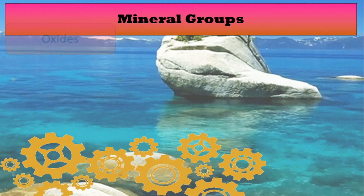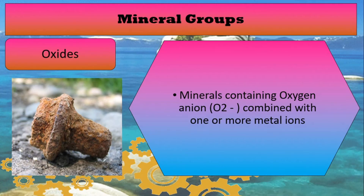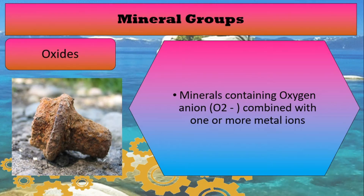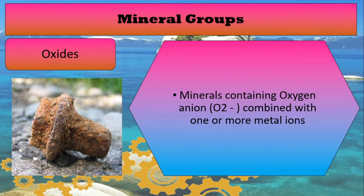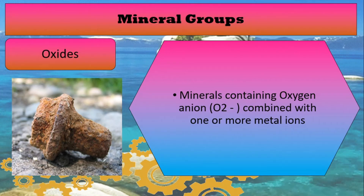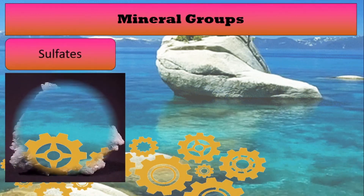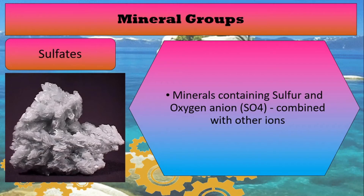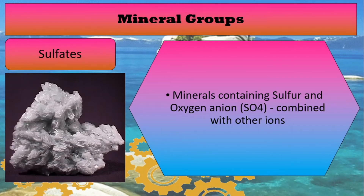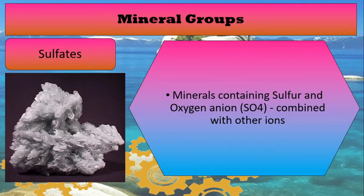Next mineral group is oxides. Oxides are minerals containing oxygen combined with one or more metal ions. Oxides are commonly known as rust, or things that attach to a metal when it gets oxidized. The third mineral group is sulfates. Sulfates are minerals containing sulfur and oxygen combined with other ions. Sulfates are found most commonly in cleaning detergents and even shampoo.